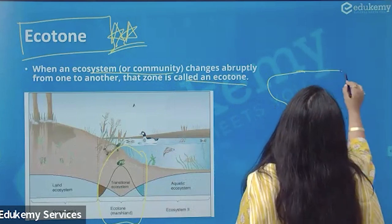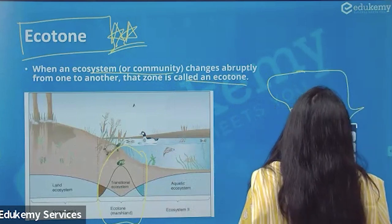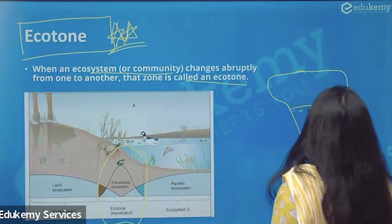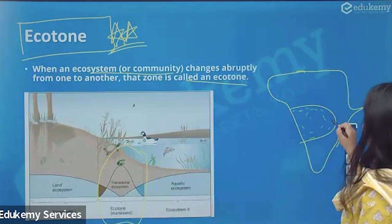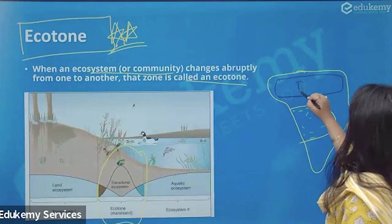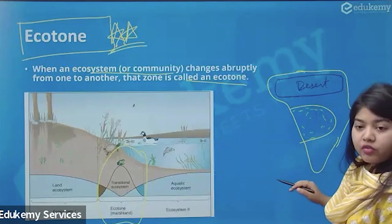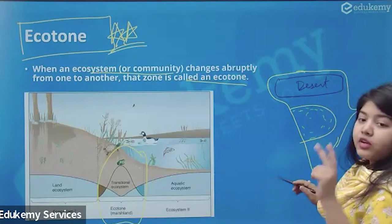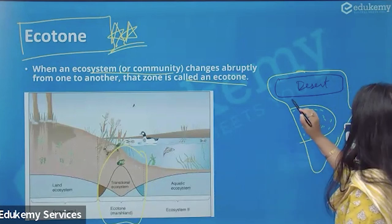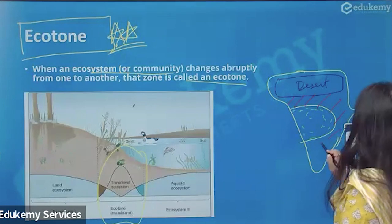To understand this with an example from Africa: I have rainforest here and desert in this region. These are two extremely different types of ecosystems, and in between I have a transition called savannah.